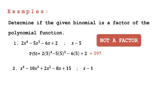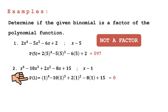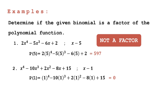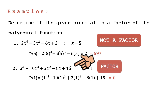For the second example, we have x⁴ minus 10x³ plus 2x² minus 8x plus 15 divided by x minus 1. Let's identify if x minus 1 is a factor. Using the remainder theorem, substitute x equals 1 and simplify. The remainder is equal to 0. Since the remainder is 0, x minus 1 is a factor of this polynomial function.